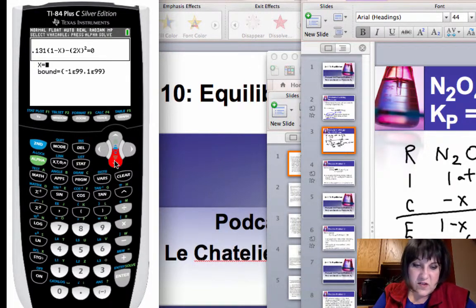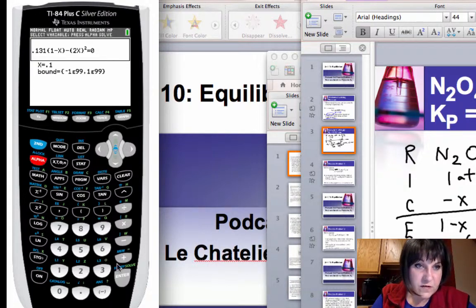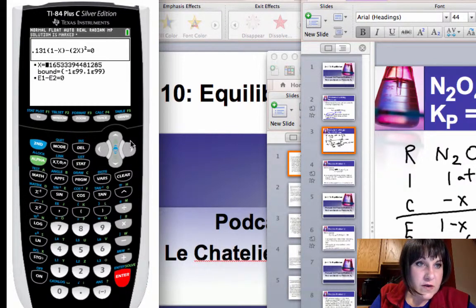And for x, let's just pick, I don't know, 0.1. And then hit alpha solve, not just solve, but alpha solve. So I get 0.16533.